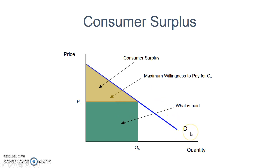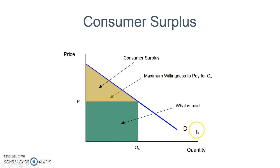Consumer surplus is found below the demand curve and above equilibrium. The demand curve looks the way it does partly because of diminishing marginal utility. You can calculate consumer surplus using the demand curve, or using marginal utility — they mean the same thing. Demand equals marginal utility, and both graphs can be used to calculate consumer surplus.